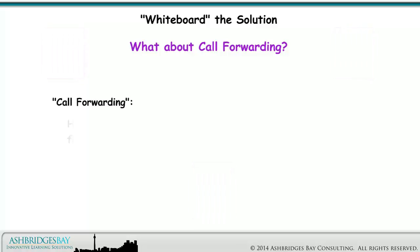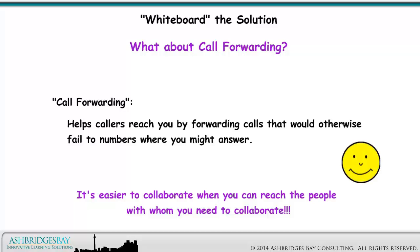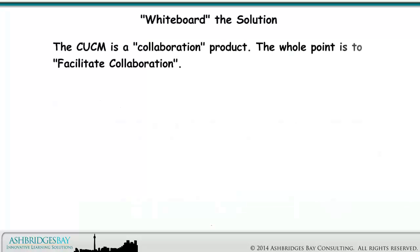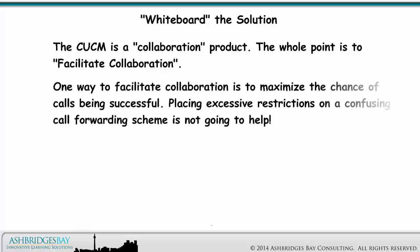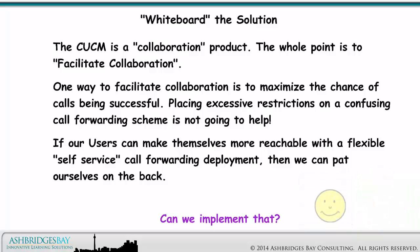Call forwarding helps callers reach you by forwarding calls that would otherwise fail to numbers where you might answer. It's easier to collaborate when you can reach the people with whom you need to collaborate. The CUCM is a collaboration product — the whole point is to facilitate collaboration. One way to facilitate collaboration is to maximize the chance of calls being successful. Placing excessive restrictions on a confusing call forwarding scheme is not going to help. If our users can make themselves more reachable with a flexible self-service call forwarding deployment, then we can pat ourselves on the back. Sure we can — and Enterprise 20 did.